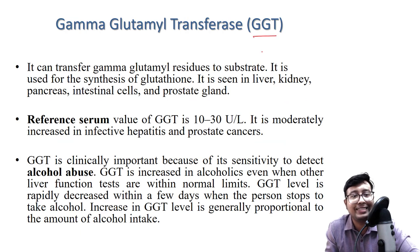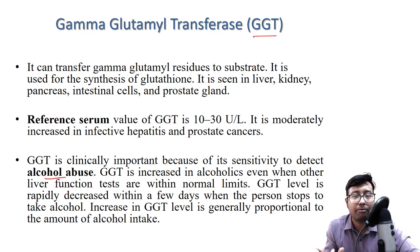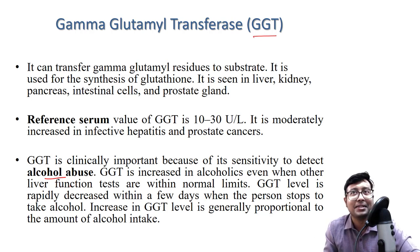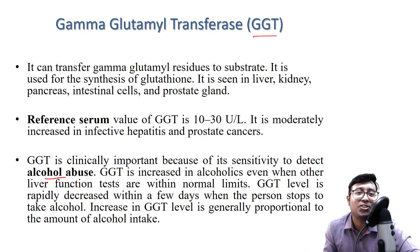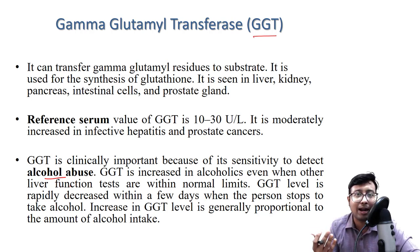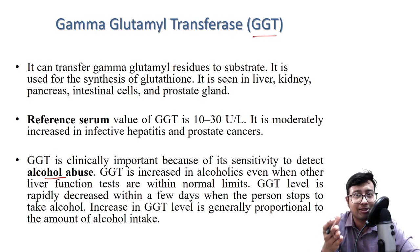Next is gamma-glutamyl transpeptidase (GGT). At your level, you just need to know it is only increased in alcoholism. In patients with chronic alcohol abuse, the level of GGT will increase. Alcohol usually evaporates and after 72 hours you may not detect it from breath — but GGT level remains elevated, making it a useful marker for chronic alcoholism. GGT is thus a reliable marker for chronic alcohol consumption.